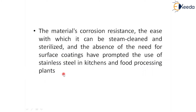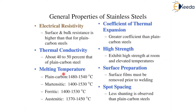Key properties of stainless steel include electrical resistivity — its surface and bulk resistance is higher than plain carbon steel — and a coefficient of thermal expansion. It must exhibit high strength at both room temperature and elevated temperatures. Thermal conductivity is approximately 40–50% that of plain carbon steel.